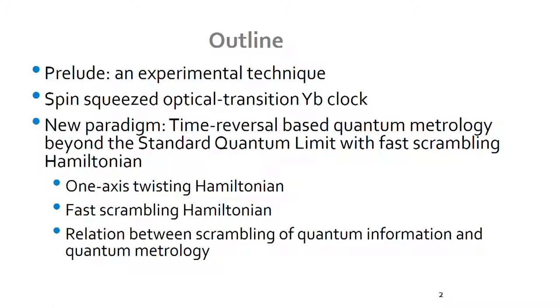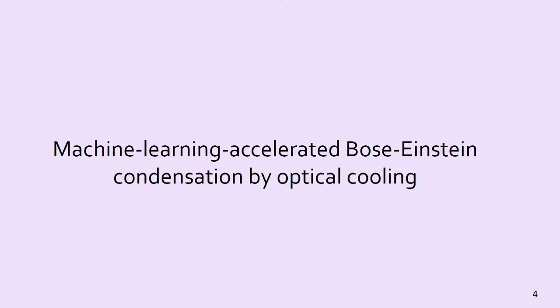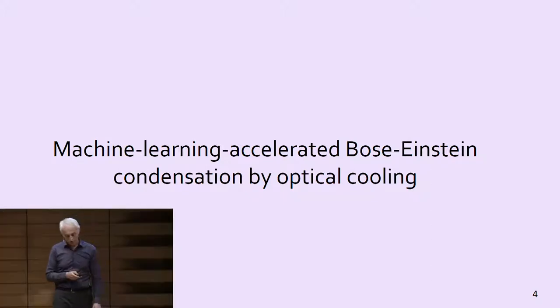Finally, I would like to point out what I think is a pretty deep connection between scrambling of quantum information and quantum metrology beyond the standard quantum limit. But before that, I'd like to start with a prelude — some technology that I think would be important and useful for many atomic physics experiments — and that's the use of machine learning to optimize complex experimental sequences. In particular, I'd like to tell you about machine learning accelerated Bose-Einstein condensation by optical cooling.